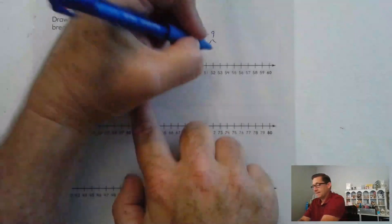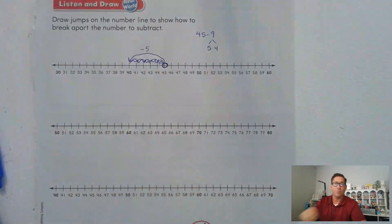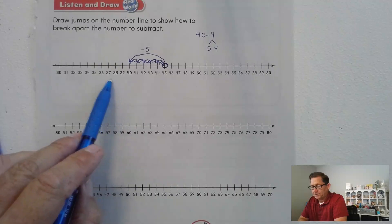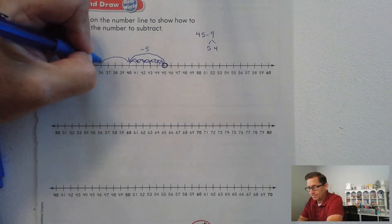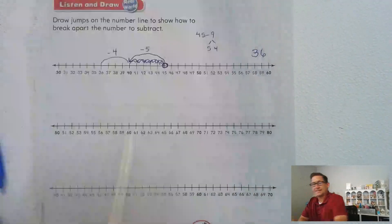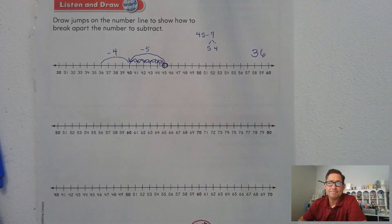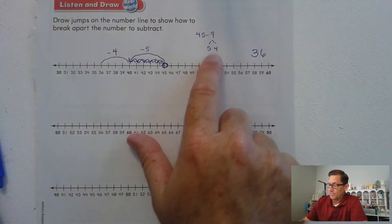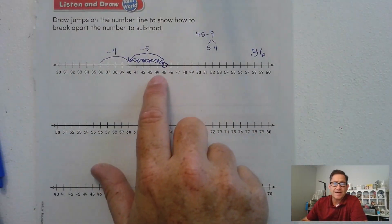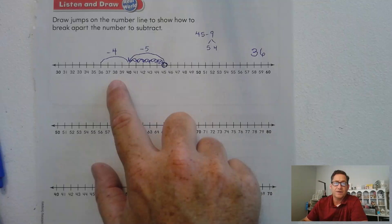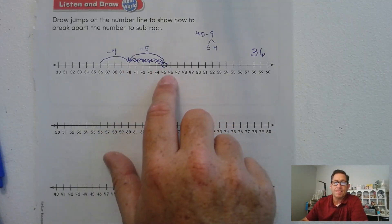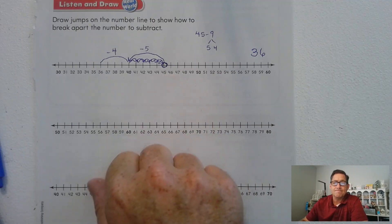Now I also need to subtract 4 more. So 4: 1, 2, 3, 4. So we're at 36. So I broke up the 9 into 5 and 4. Could you have subtracted 9 by just doing 9 single jumps? Sure.